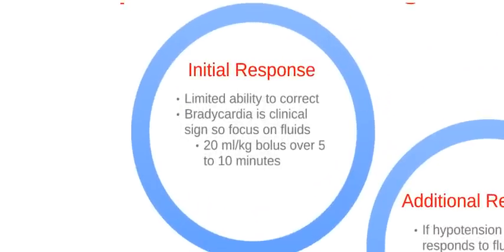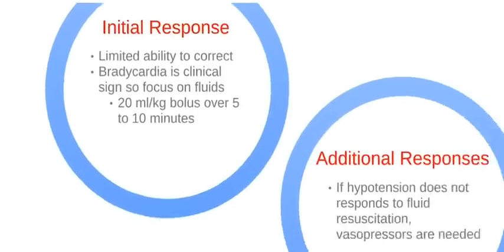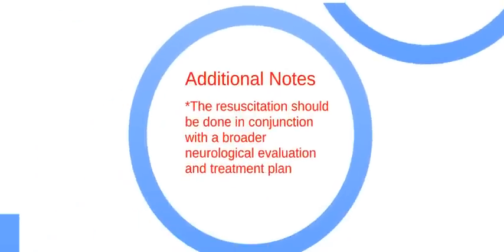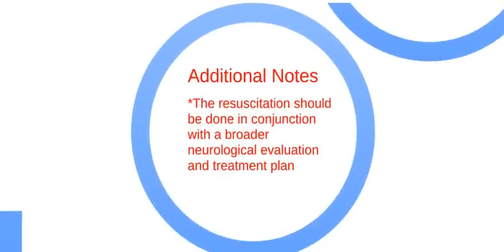The initial response to neurogenic shock has a limited ability for correction. Bradycardia is a clinical sign. Focus on boluses of 20 mL per kg over 5 to 10 minutes. Additional responses include treatment of hypotension that does not respond to fluid resuscitation — vasopressors are needed. Resuscitation should be done in conjunction with a broader neurological evaluation and treatment plan.